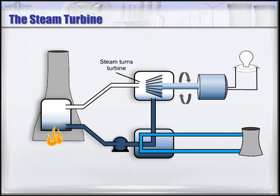The steam is then piped into the steam turbine, which spins the turbine blades, thus spinning the generator and creating electricity.